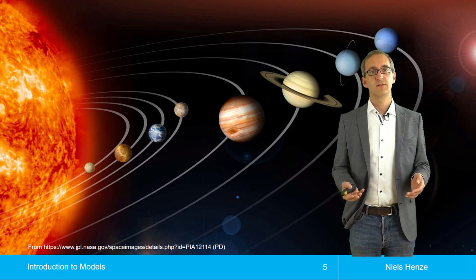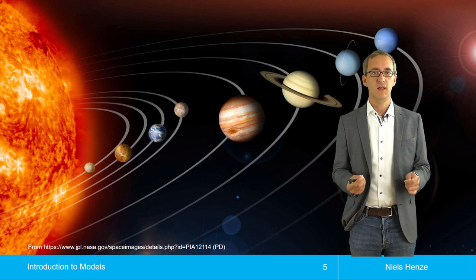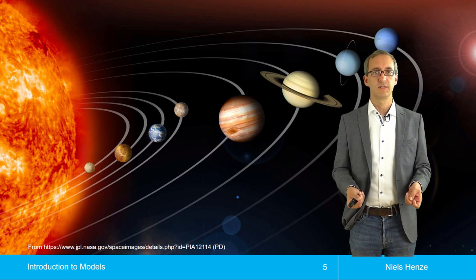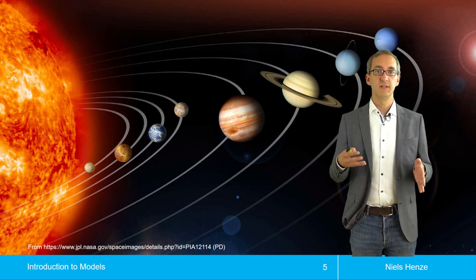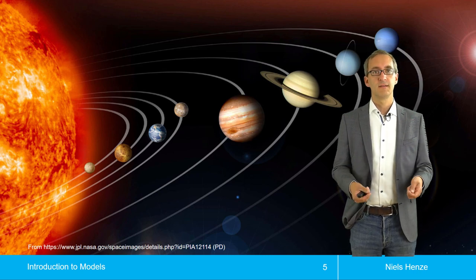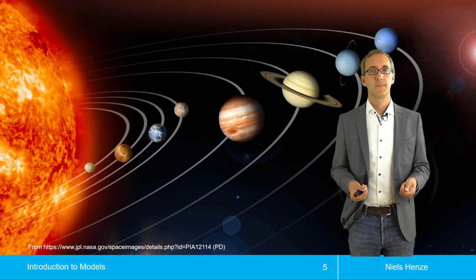But this is actually not the case. So they don't move on this ellipsis around the sun, but the sun and the planets, they move around a joint center of gravity. And if you feed this into our model, so if we update our model and improve it, then we get a new one, and the new model actually enables us to make better predictions.